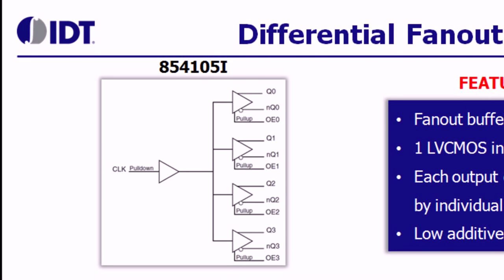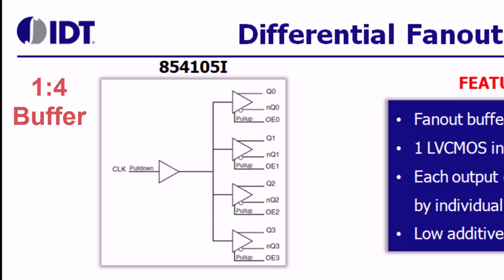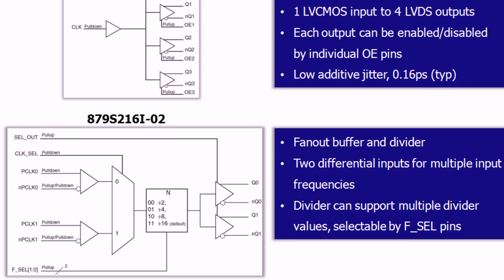854105 is another example of a simple 1-to-4 buffer which has individual output enable pins. 879S216, as you can see on the bottom of the screen, has a MUX, divider, and fan-out buffer all combined into one flexible device. Such devices can not only provide the fan-out, but in some cases they can build the whole clock tree for a customer.